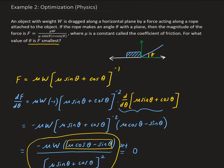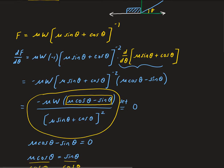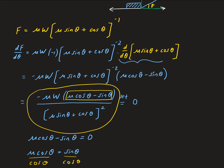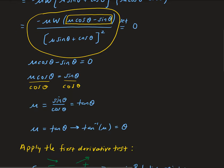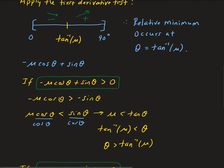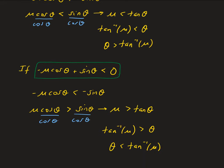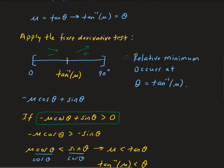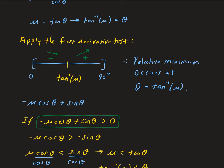This is a typical optimization problem: we take the derivative of the function, set it equal to zero, find the critical value, and then apply the first derivative test to determine whether that critical number is a relative minimum or relative maximum. In this case we get one critical number, and using a bit of logic we confirm it is indeed a relative minimum — which is exactly what we wanted.